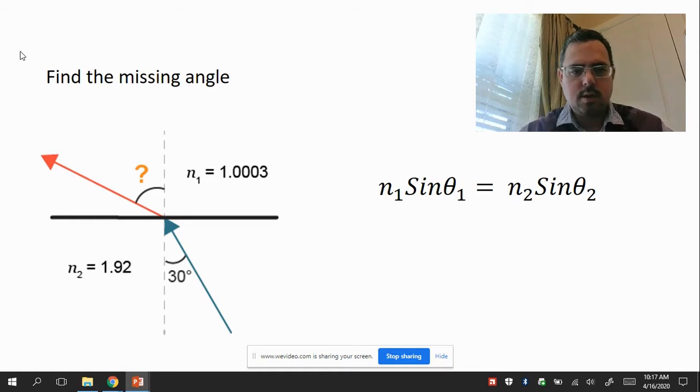Alright, so if you look at the screen, you'll see on the left side we have a picture. The light ray is moving from the bottom to the top and is crossing a barrier, going from one type of material to another. You'll see N2 tells you the index of refraction is 1.92, so this is something that light travels a little slower in. It could be glass or water or something like that.